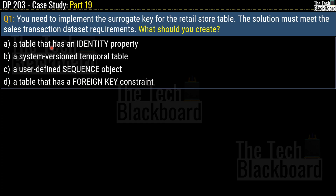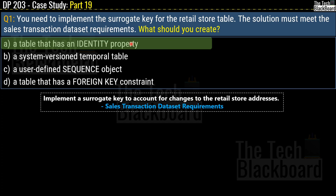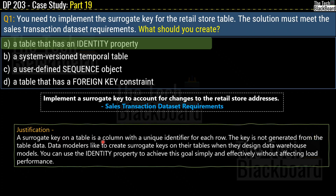This question refers to the requirement to implement a surrogate key to account for changes to the retail store addresses, from the sales transaction dataset requirements. The answer is a table that has an identity property. A surrogate key on a table is a column with a unique identifier for each row; the key is not generated from the table data. Data modelers use surrogate keys in data warehouse design, and the identity property achieves this goal simply and effectively without affecting load performance.